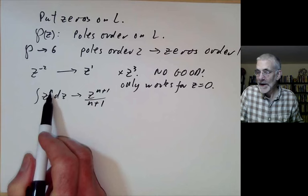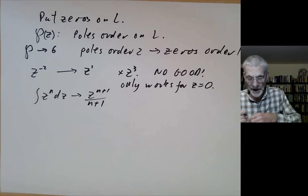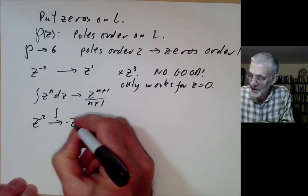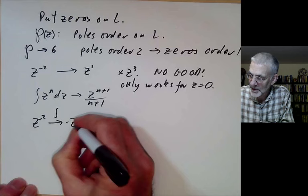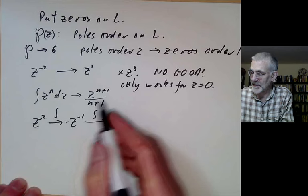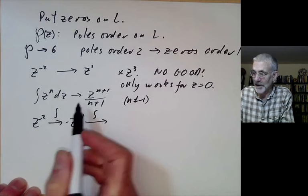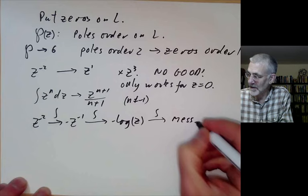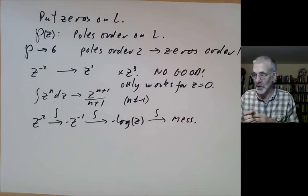You think we just have to raise the exponent by 3, so we just integrate 3 times. Let's try: we start with z to the minus 2, integrate to get minus z to the minus 1. Then we integrate z to the minus 1, but this only works for n not equal to minus 1. If n equals minus 1, we get minus log of z. And if we try integrating this, we get some sort of a mess and we don't get z to the 1. So integrating 3 times doesn't work.